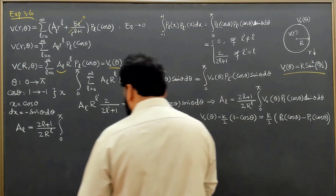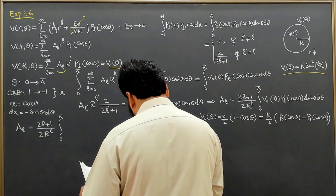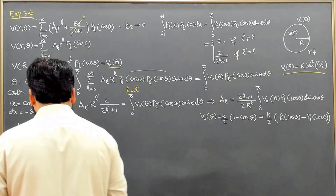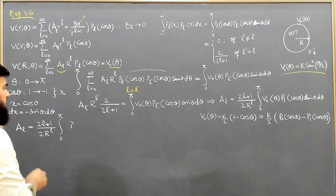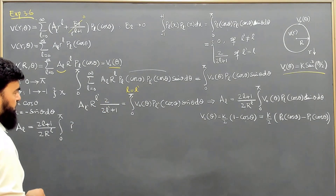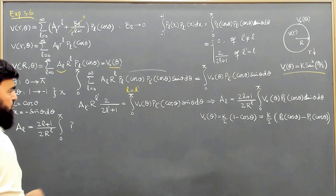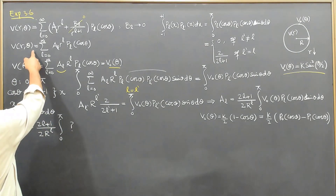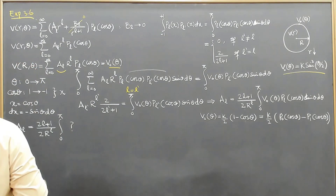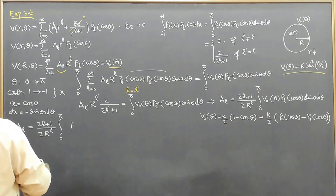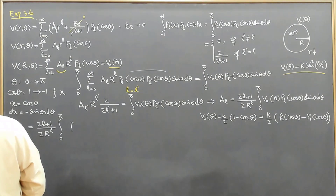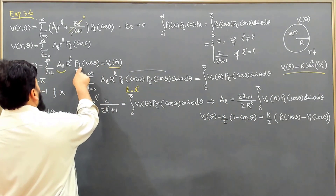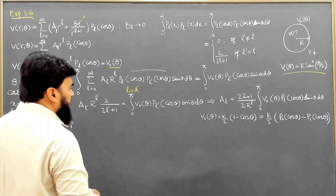Now if I put this back into equation 3.67, I don't even need to evaluate the integral, because the potential has already been converted into Legendre polynomials. So I go directly to equation V(r,θ) from equation 3.67, where V₀(θ) equals the Legendre polynomial expression.